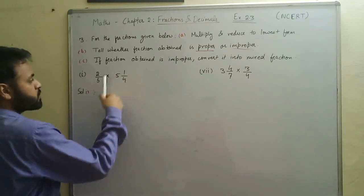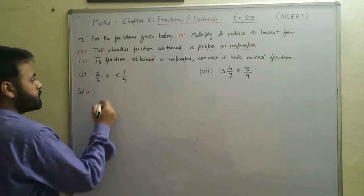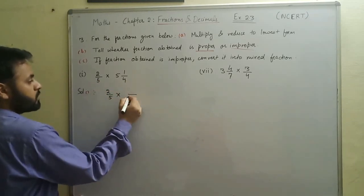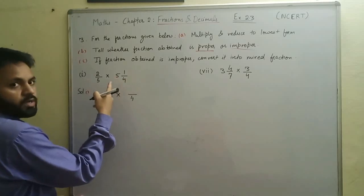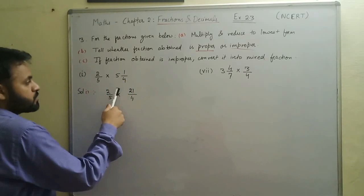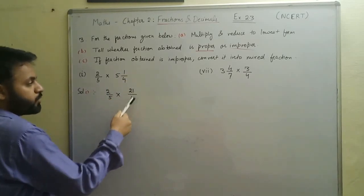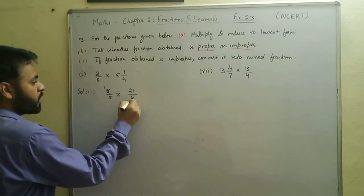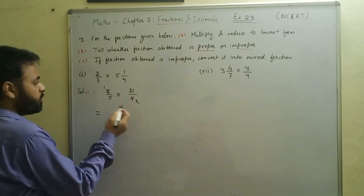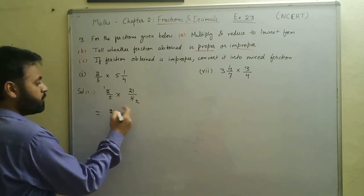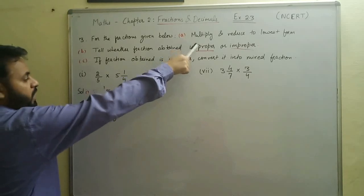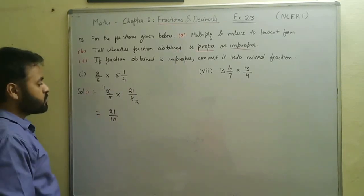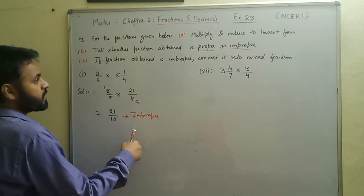In part one of question three, we have a proper fraction and a mixed fraction. We write two by five as it is and convert the mixed fraction: four times five is twenty, plus one is twenty-one, giving twenty-one by four. We can cancel the two and four: two ones are two and two twos are four. On multiplying, we get one times twenty-one over five times two, which is twenty-one by ten. Ten and twenty-one are not divisible so we cannot reduce further.